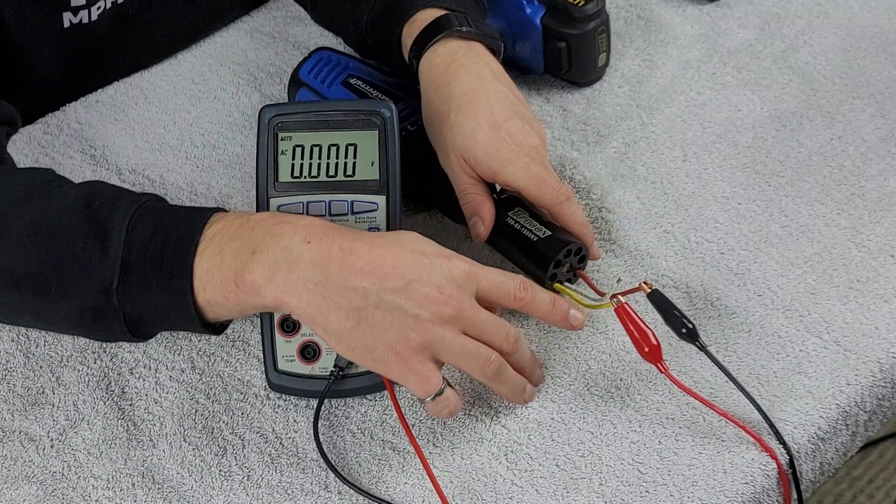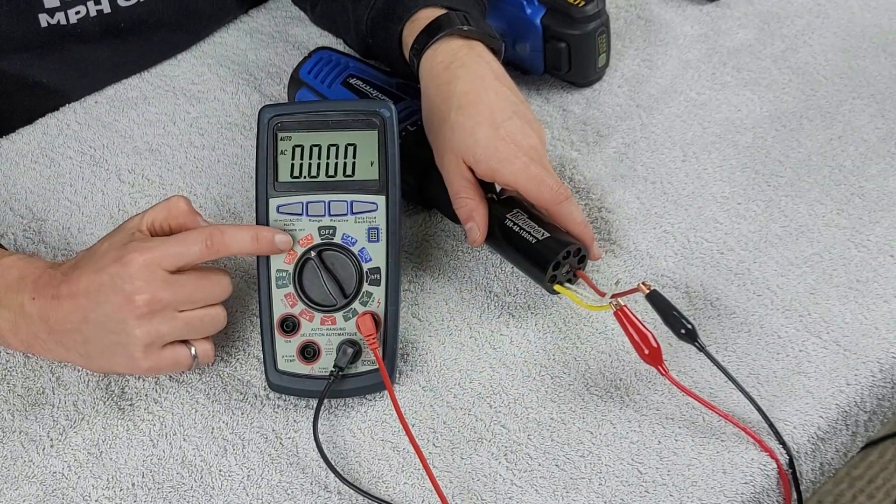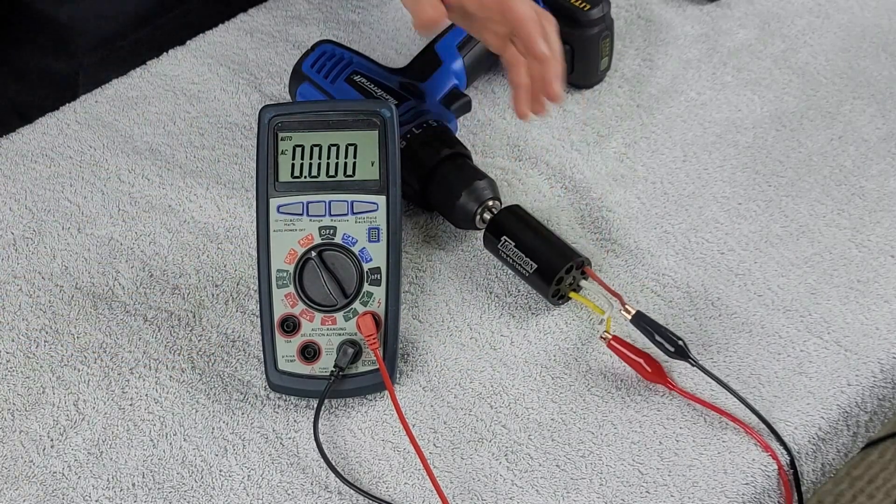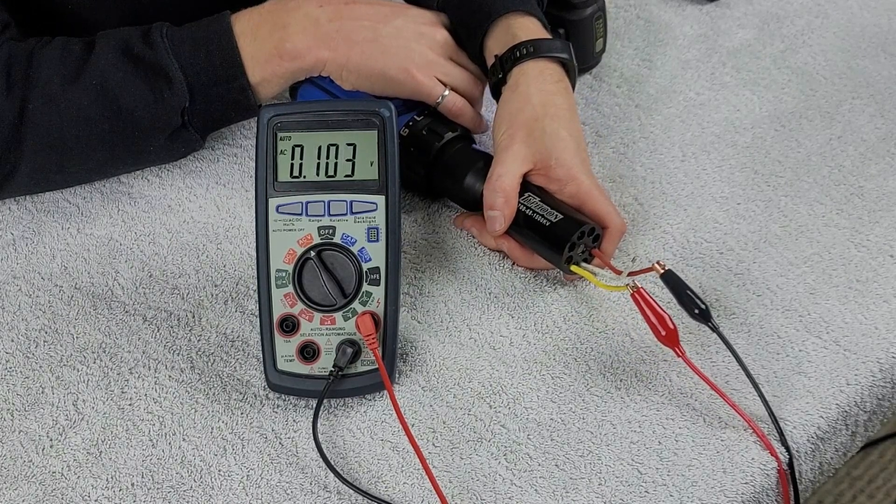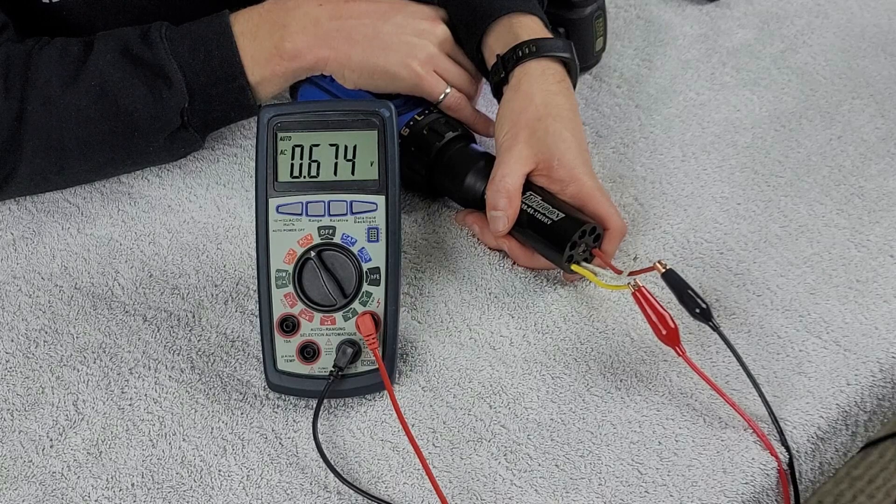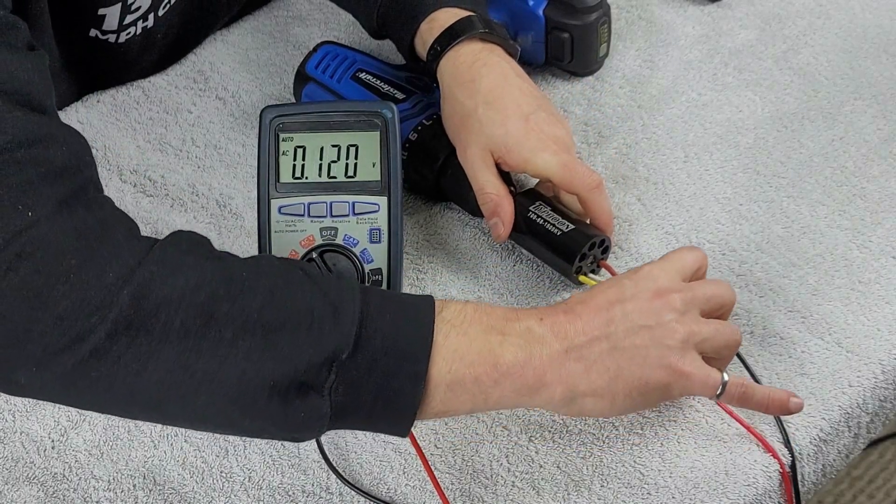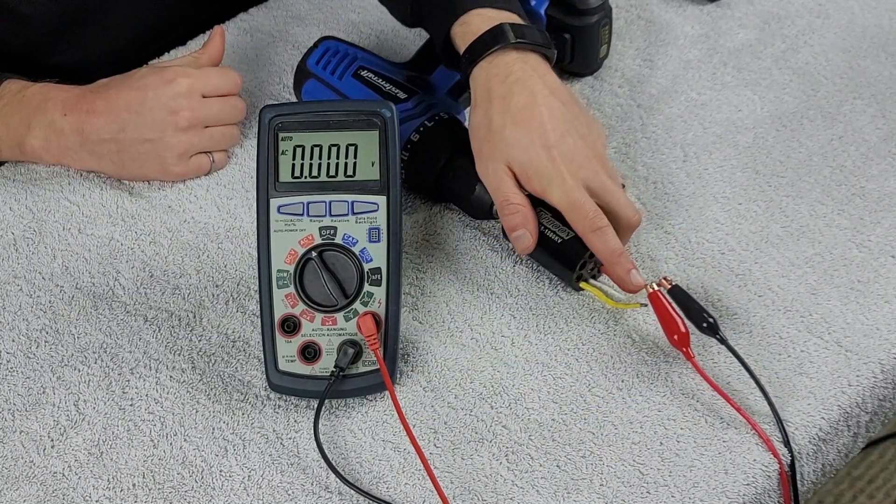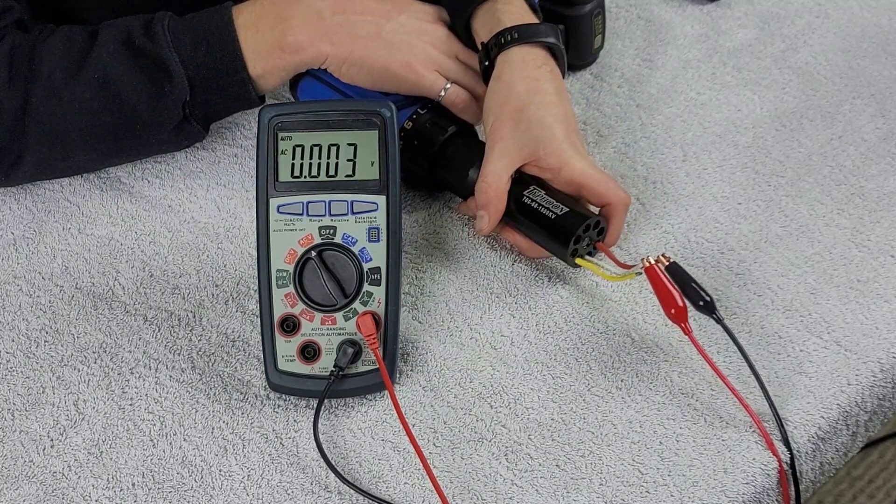So we have our first phase here being checked. This is going to be the yellow wire and the red wire, and we have our multimeter set at AC voltage. Let's fire up the drill and measure, take that first reading. So there we go, we got 6.74 as our first voltage reading. We will then take our yellow lead on the motor and replace this with the white lead. Now we're measuring red and white. We'll fire up our drill and repeat this on phase two.